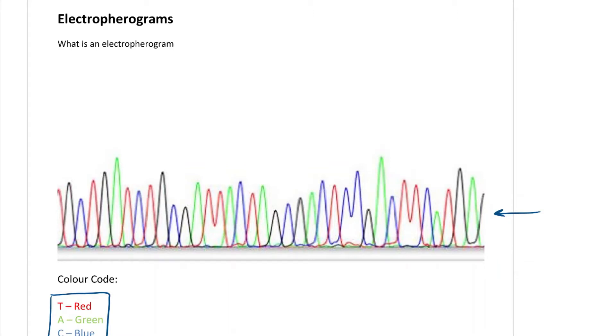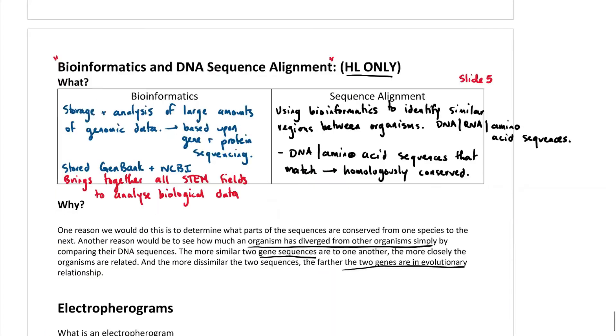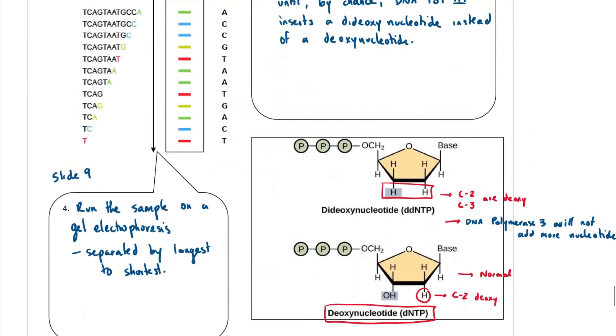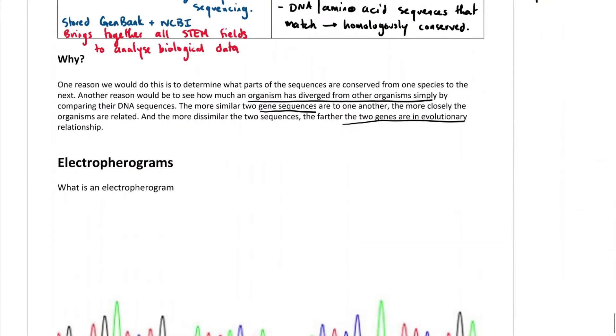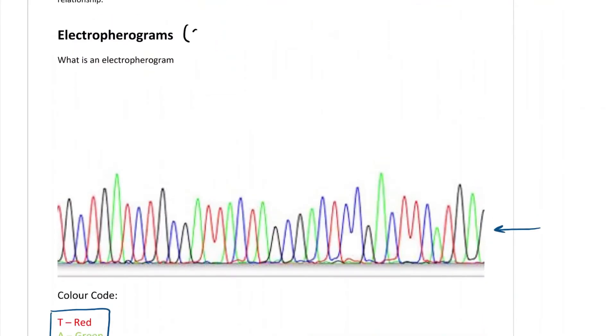So we initially talked about electropherograms in sequencing. Now, for standard level students, you don't need to know the specifics about sequencing, but you do need to be able to read an electropherogram. This is for both standard level and higher level. You don't need to know how the sequencing actually occurred to get to the electropherogram - that's for the higher level students.